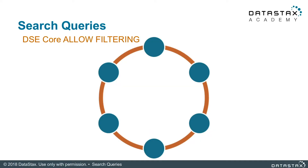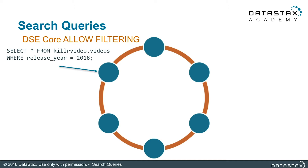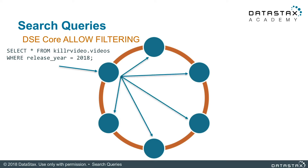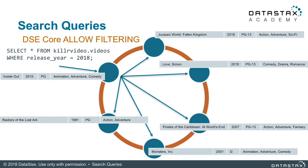Let's remind ourselves how a query would work with DSC Core when allow filtering is enabled. Here we have a query that is not using the partition key to filter by. Remember, our partition key is on video_id. SELECT * FROM killer_video.videos WHERE release_year equals 2018. The query will have to be sent to all nodes in the cluster, or enough nodes to cover the entire token range. Every node will have to go through each and every one of its partitions and rows and read the value for release_year to determine if it could be included in the result.